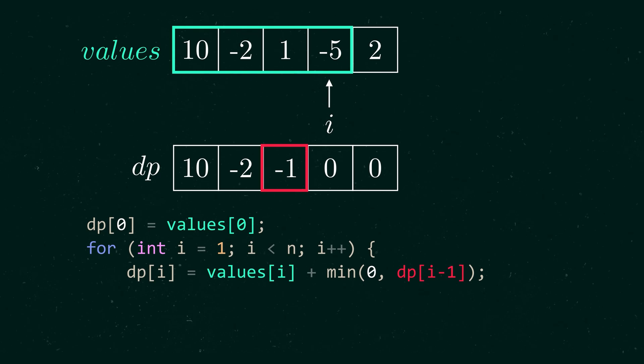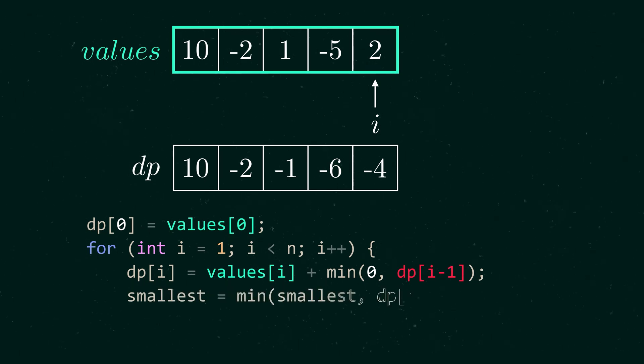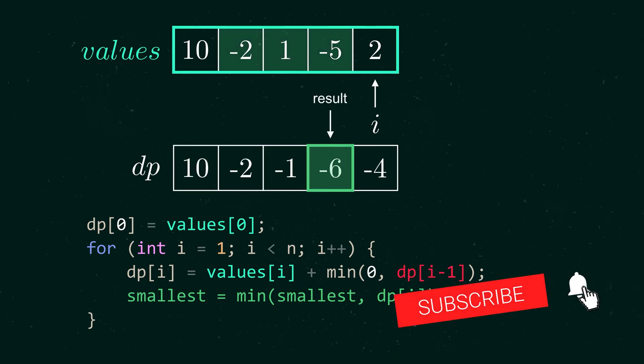We broke down the problem into one line, so we can easily find what is the minimum sum of consecutive elements which end at some index i. We just need to keep track of the smallest sum. Just print the minimum of dp. This has been minimum sum of consecutive elements visualized in 100 seconds. Like and subscribe to support this series.